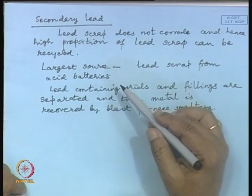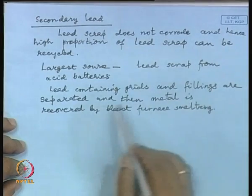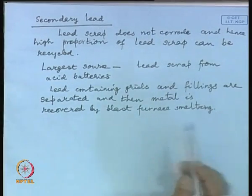The largest source of lead scrap is acid batteries from cars, which contain plenty of lead. The lead-containing grids and fillings are separated, and then metal is recovered by blast furnacing - very simple. This is one case where you can give the old battery and buy a new battery with a discount - an old lead acid battery worth about 4000 rupees may get you 200-300 rupees back.